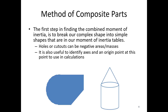Step one: we need to break our complex shape down into simple shapes that are in our table. Holes and cutouts can be negative areas or masses, and it's also useful to identify the axes or origin point at this point. For example, I might take an area and say part of it is shape number one, which is a semicircle; shape number two, which looks like a square; and shape number three, where I've cut a corner or triangle off of that square. The semicircle, the rectangle, and the triangle are all in my table. Shape three is a cutout that counts as a negative area. For the volume, I've got a cone on top of a cylinder — both available in my moment of inertia table — so those would be the two composite pieces.